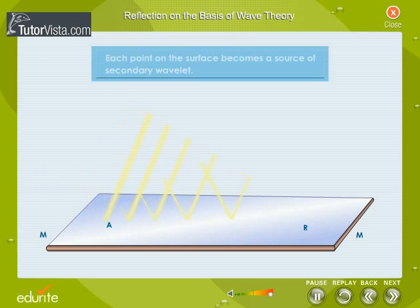According to Huygens' Principle, each point on the surface becomes a source of secondary wavelet.